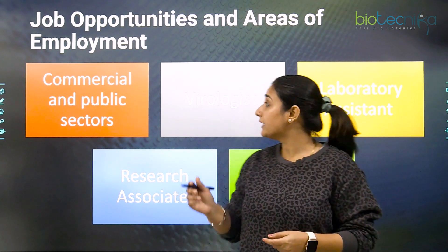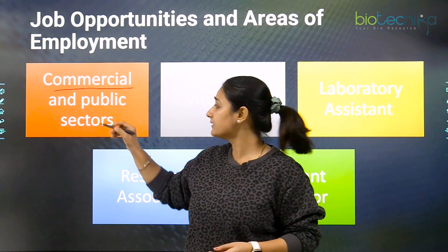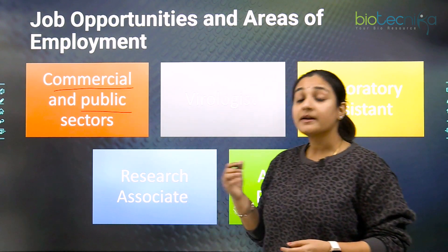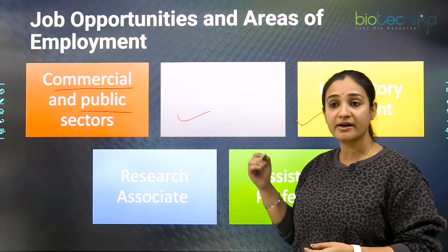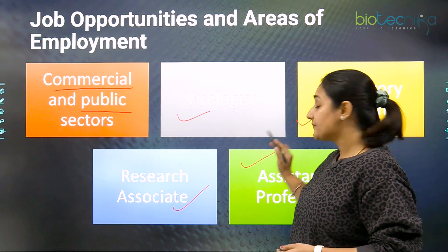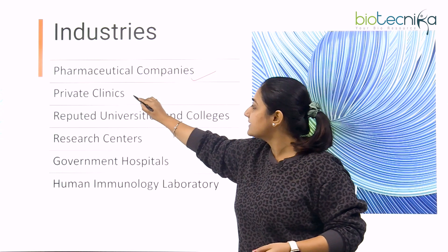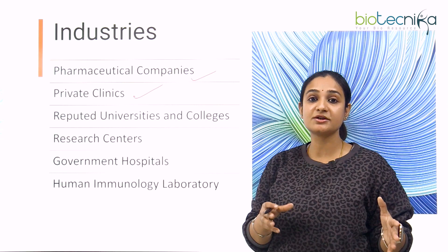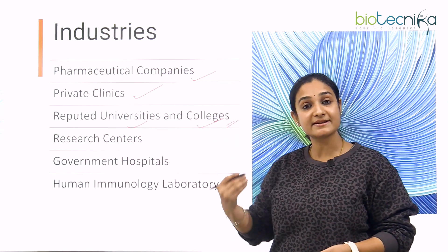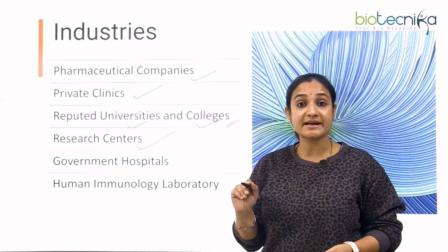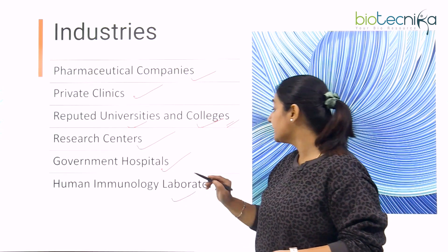When it comes to job opportunity and employment, you can work in the commercial or private sector or go for the public sector. You can work as a virologist, a laboratory assistant, a research associate, or as an assistant professor. Industries you can apply to include the pharmaceutical industry, private clinics, universities and colleges at both private and public level, research centers as a research associate, government hospitals as a lab technician or lab assistant, or human immunology laboratories.